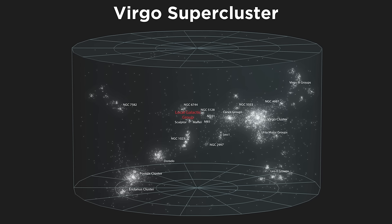Let's take a look at this collection of galaxies. This is called the Virgo supercluster, containing over a hundred smaller groups and clusters of galaxies, such as the Virgo cluster and the local group.